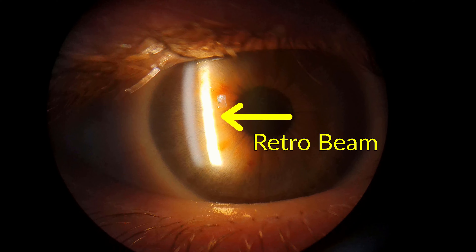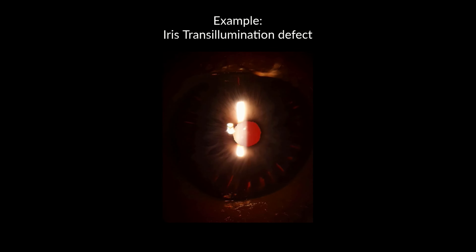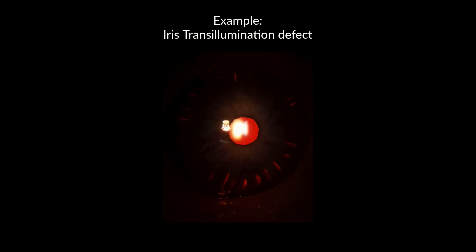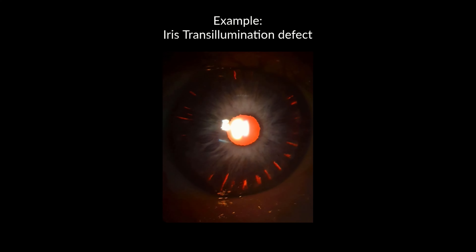To use the retina to retroilluminate, use a bright beam and direct the light source on the posterior surface of the retina. Using the red reflex, you can assess the lens and observe any iris translumination defects. You should reduce the height of the slit beam for this.